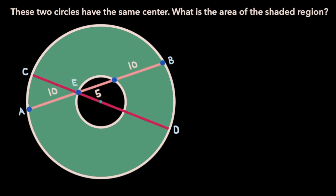Now because we have these two intersecting chords within our circle, we can apply the chord-chord theorem. I'll have a proof for the chord-chord theorem linked in the top right of the screen right now, so check that out if you're interested. Essentially, what the chord-chord theorem says in this case is that the length of line segment AE times the length of line segment EB is equal to the length of line segment CE times the length of line segment ED.